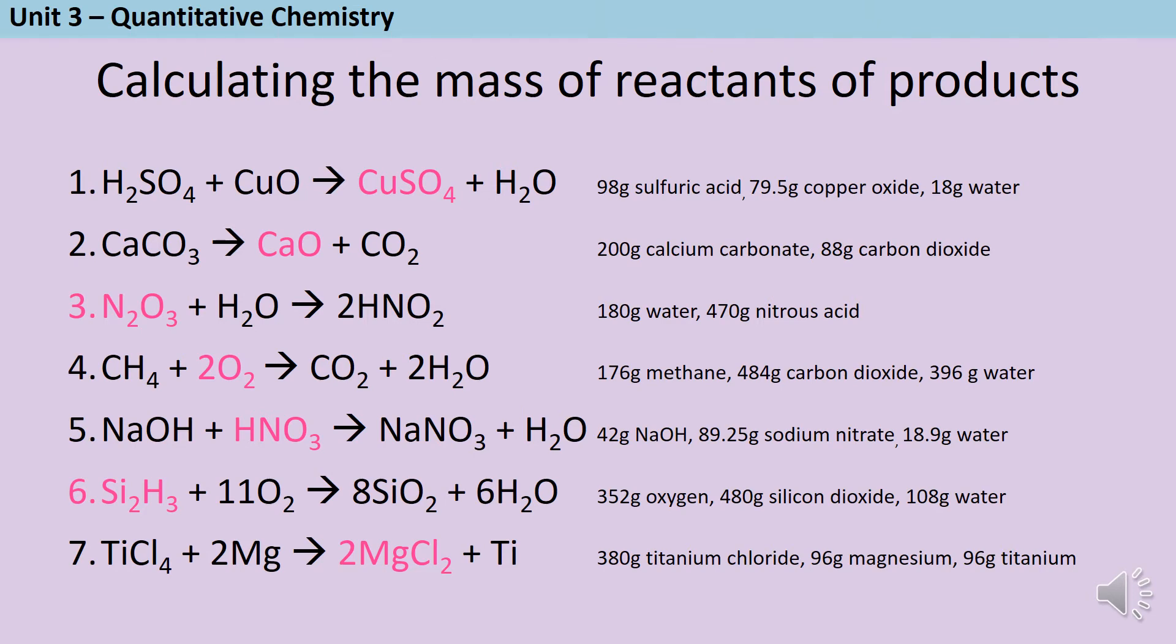For question number one, the total mass of the sulfuric acid and copper oxide together is 177.5 grams. The law of conservation of mass tells me that the mass on the right hand side must be the same. So if I subtract the mass of the water, which is 18 grams from the 177.5 grams, that leaves me with a final mass of copper sulfate of 159.5 grams.